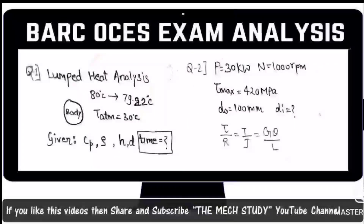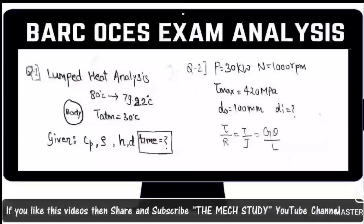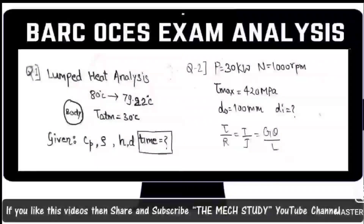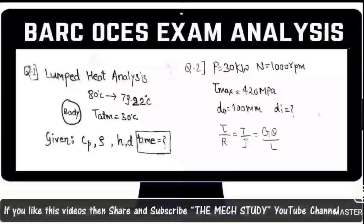The first question is on lumped heat analysis. A body has an initial temperature of 80 degrees centigrade, reducing to 79.22 degrees, and the atmospheric temperature is 30 degrees centigrade. They will also provide Cp, density, heat transfer coefficient, and diameter of the body. You need to calculate the time. Apply the lumped heat analysis formula, take a logarithm, and solve. It is a slightly lengthy calculation but straightforward if you have accuracy.